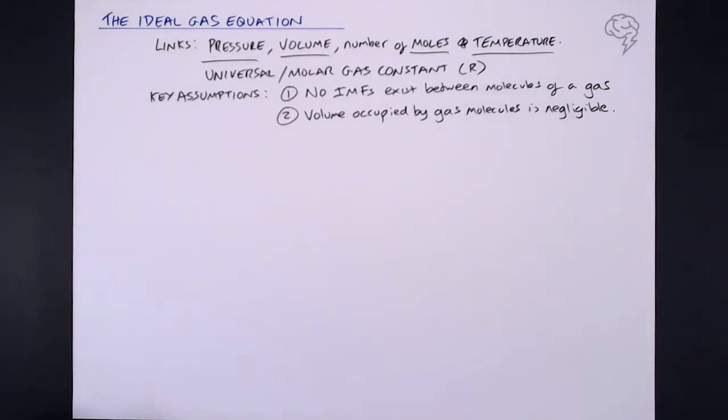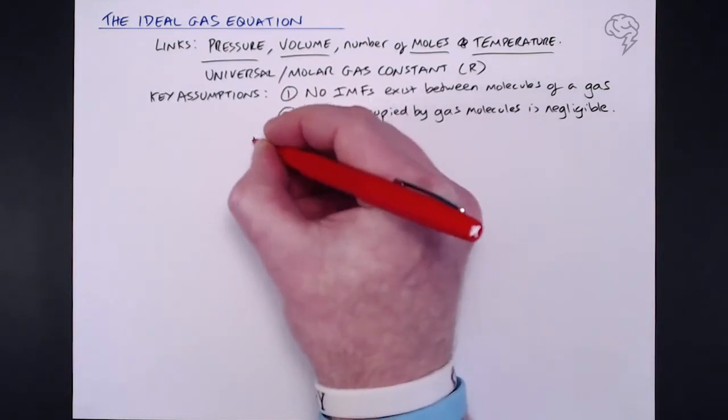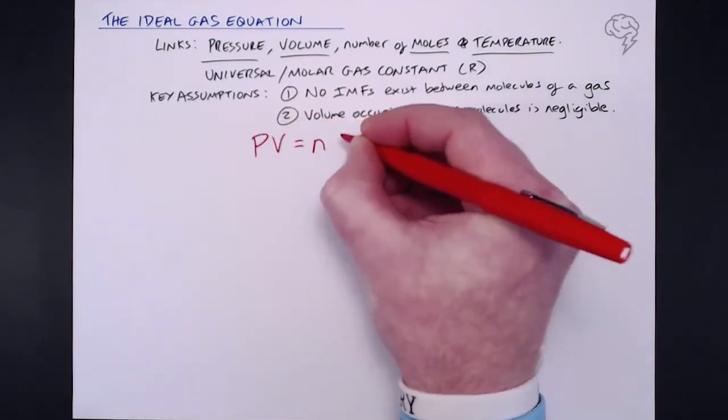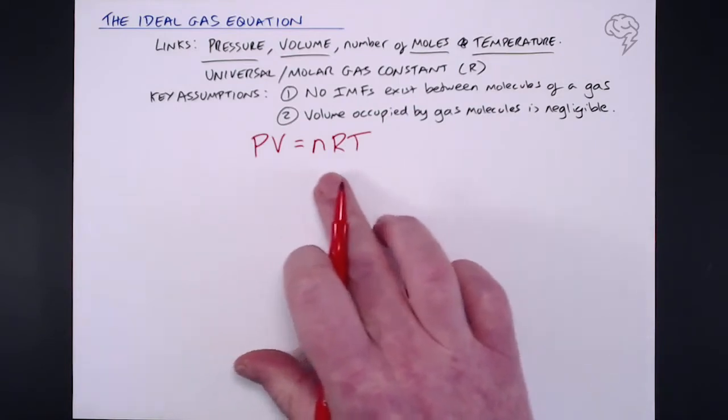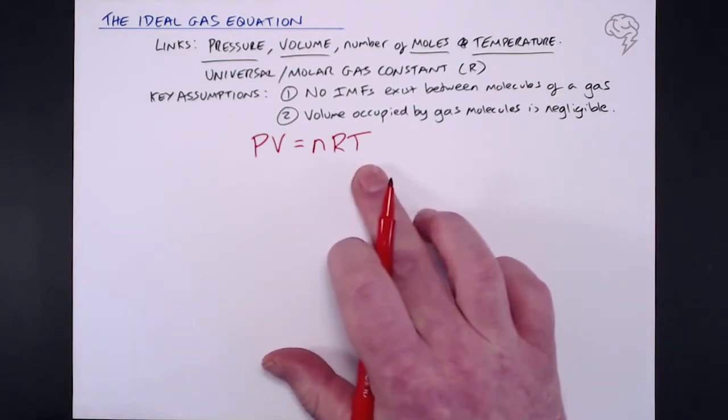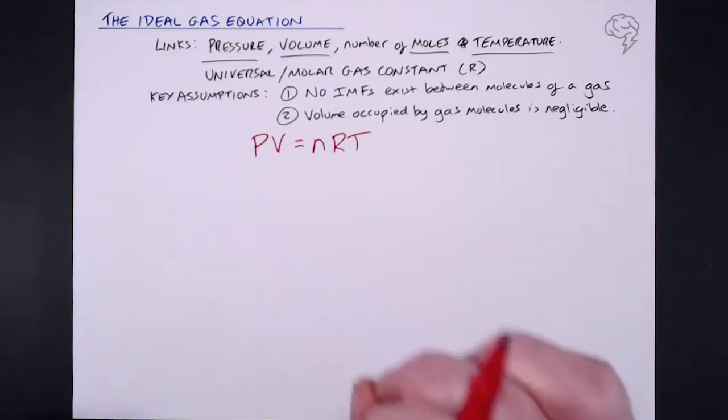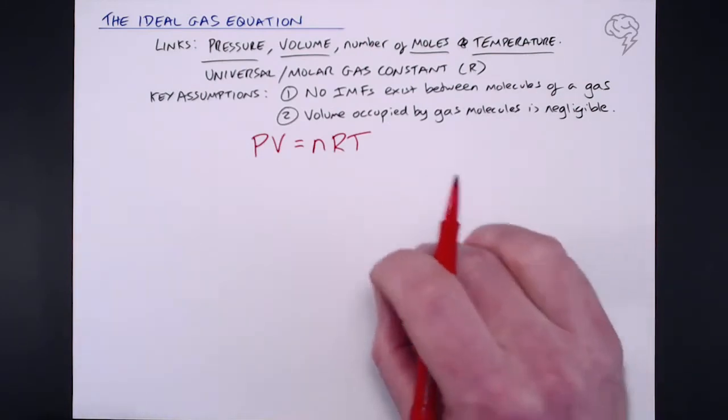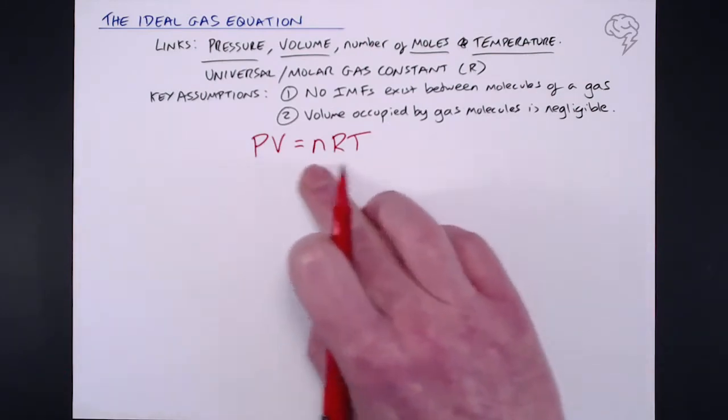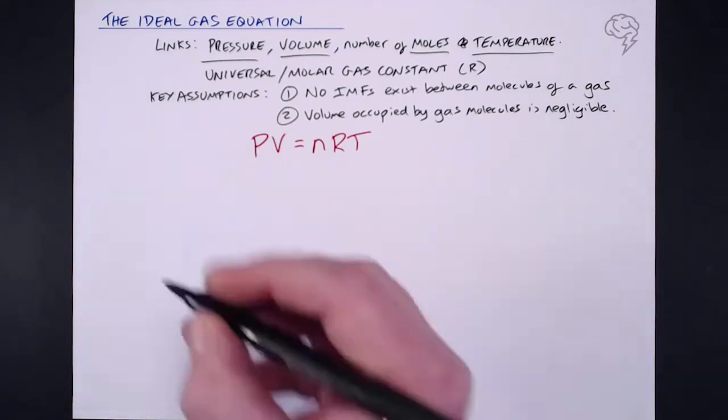Now, speaking of the equation, the all important equation: PV equals NRT. So what we need to do is we need to look at each of these five things individually, which obviously stand for these five things we talked about up here, and talk about their units.